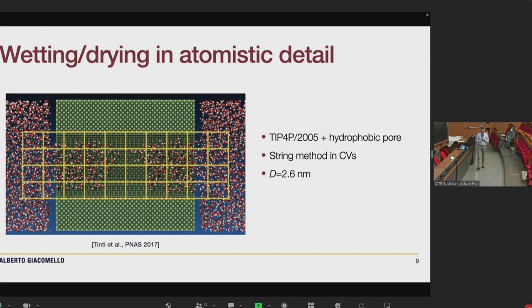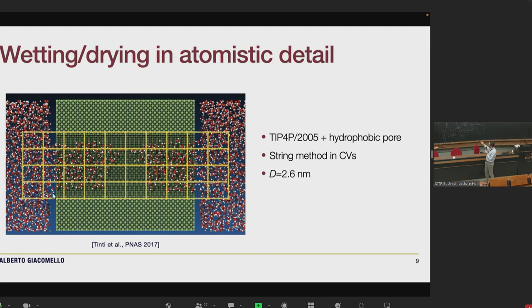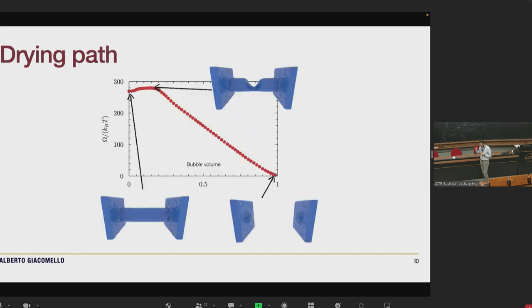Since we are so confined we can give a look to the atomistic details. This was an all-atom simulation with TIP4P water. To drive the event and measure the free energy we use the coarse-grained density of the system as a collective variable. What we obtained is the most probable way in which a bubble forms inside a cylindrical pore, which occurs with asymmetric formation of a bubble which then forms a capillary neck. This is the transition state and then two symmetric menisci move away towards the cavity mouth.